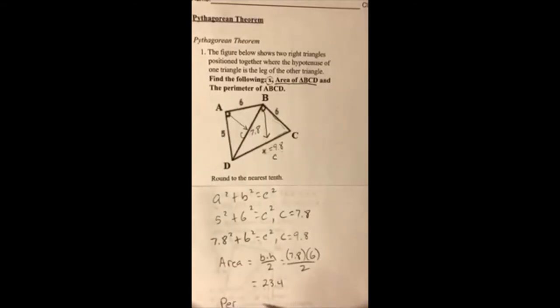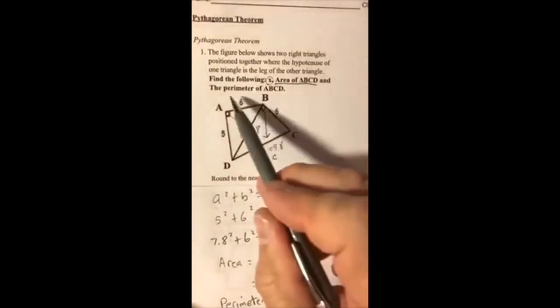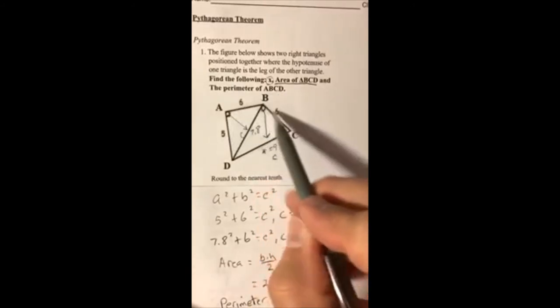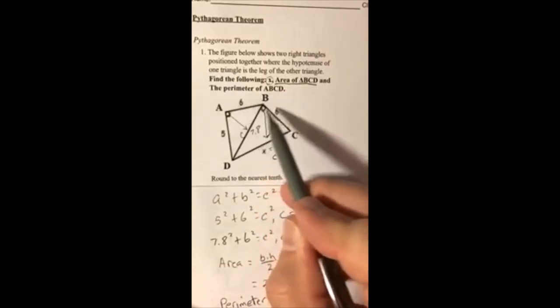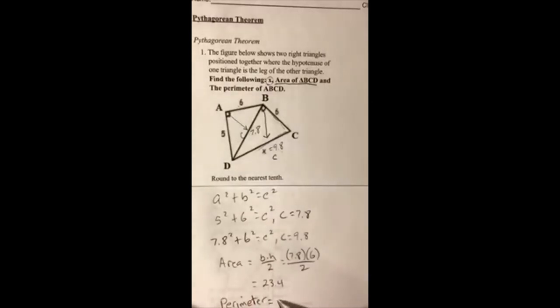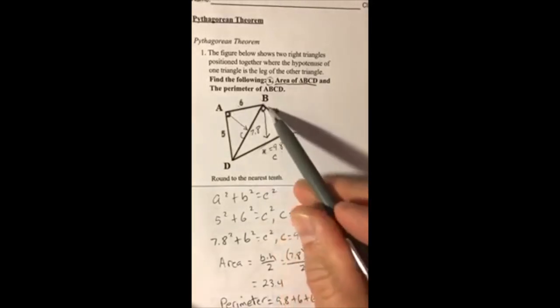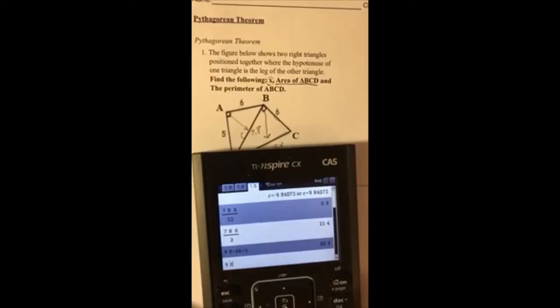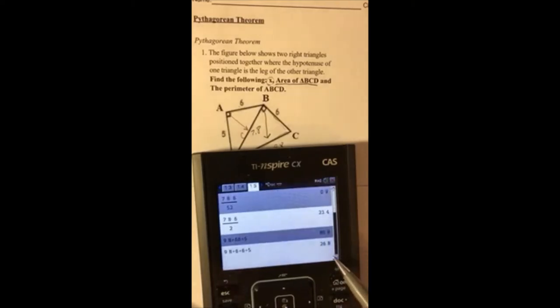Now for the perimeter, this is easy because we know all the sides. Find the perimeter of ABCD, all four sides of this four-sided figure. So add up all four sides: 9.8 + 6 + 6 + 5. I took this side plus this side plus this side plus this side. That gives me the perimeter: 9.8 + 6 + 6 + 5 = 26.8.